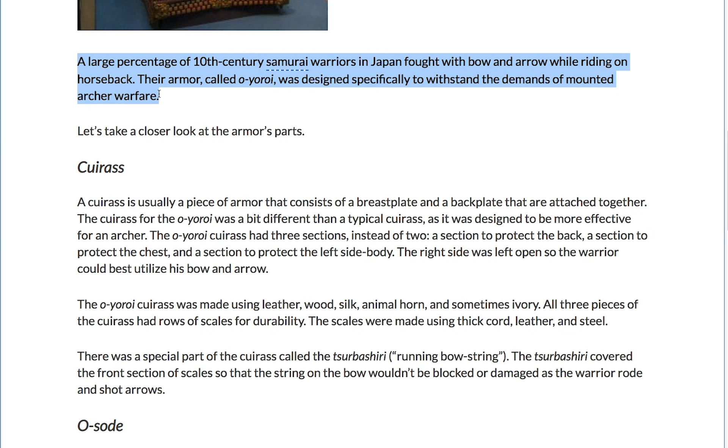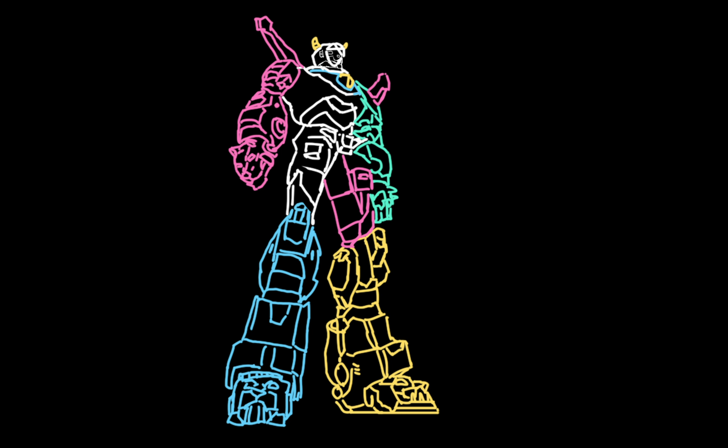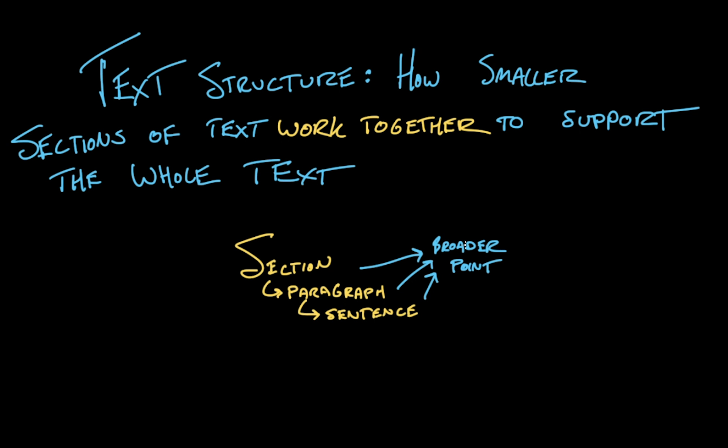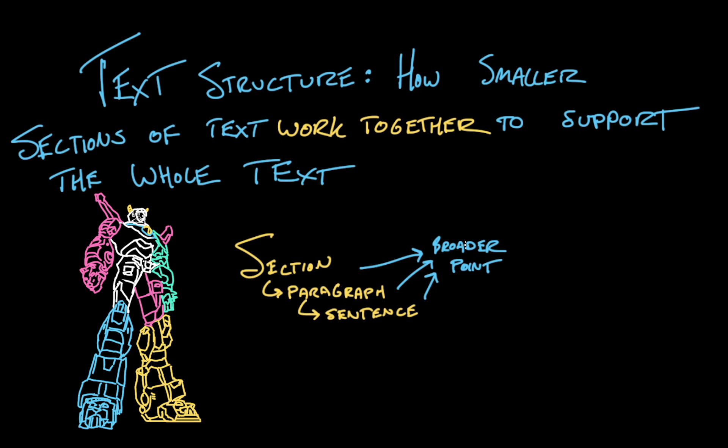Each section or paragraph is like a leg or an arm of Voltron. Each sentence is a muscle, or a finger, or a robo-toe. Together, moving as one, they tell a story or make an argument — which is, I guess, like Voltron winning a fight? I feel like I've carried this metaphor as far as it'll go. The point is, if you're having trouble making sense of an informational text, think of it as a giant battle robot. What is each component part of the text trying to accomplish, and when you put all those parts together, what are they trying to do?